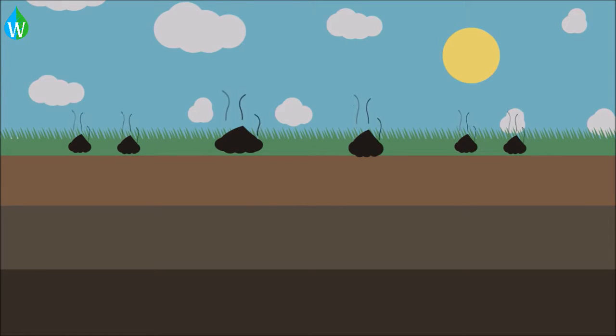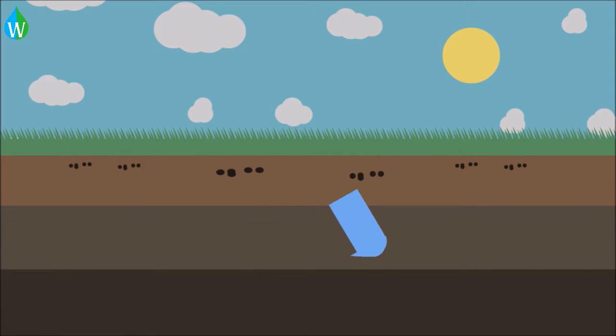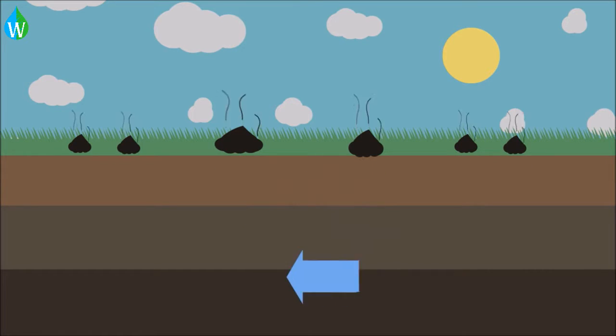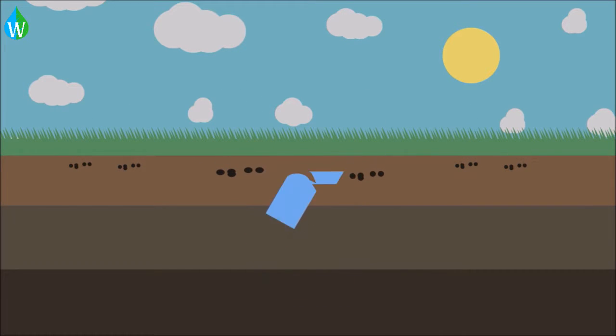Instead of fertilizers, manure is used. This recycles waste and improves the soil structure. However, it is smelly and more difficult to apply than chemical fertilizers and also means the farmer has less control over the mineral content they are putting into their soil.